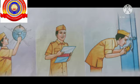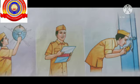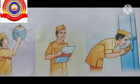In school, daily you have eight periods. In between each period, the bell rings. Who rings the bell? The attender rings the bell at fixed timings. The attender also brings the attendance register and important circulars to classrooms. After school hours, the attender will lock all the classrooms.